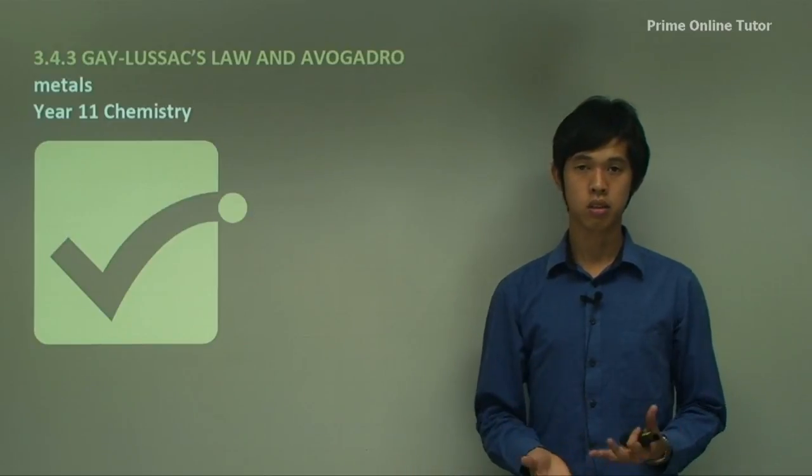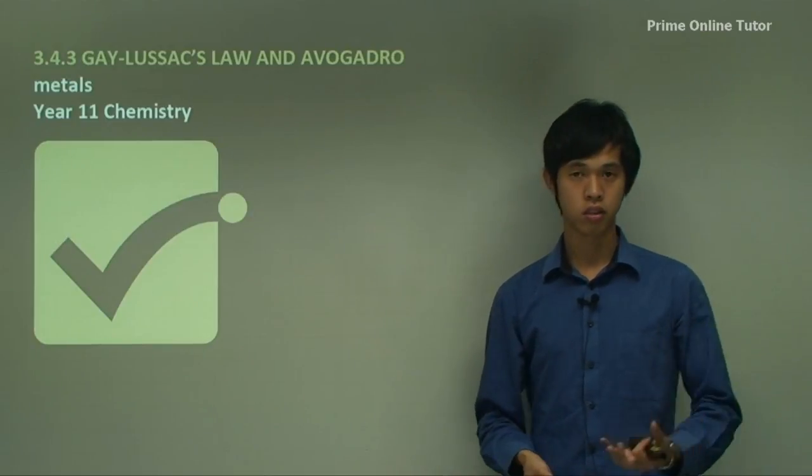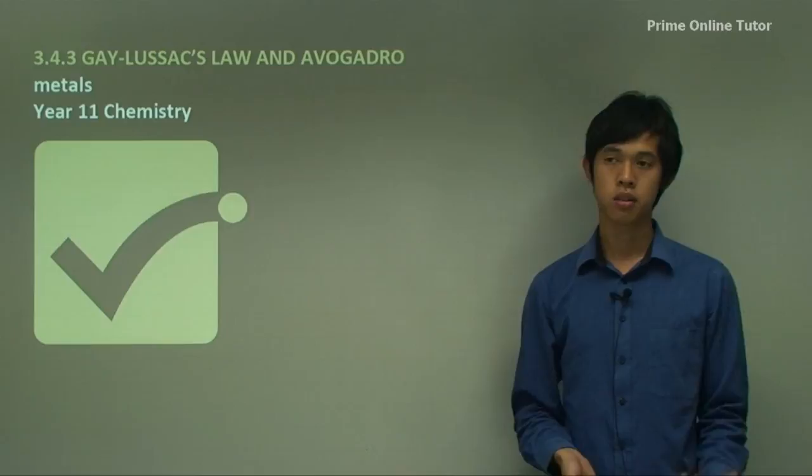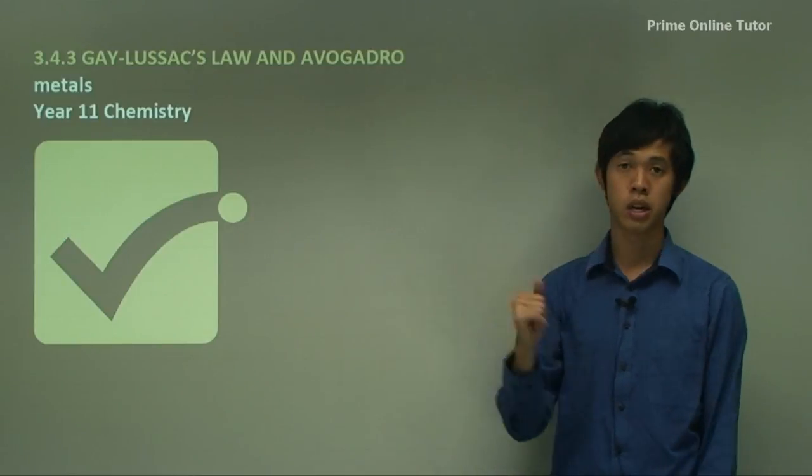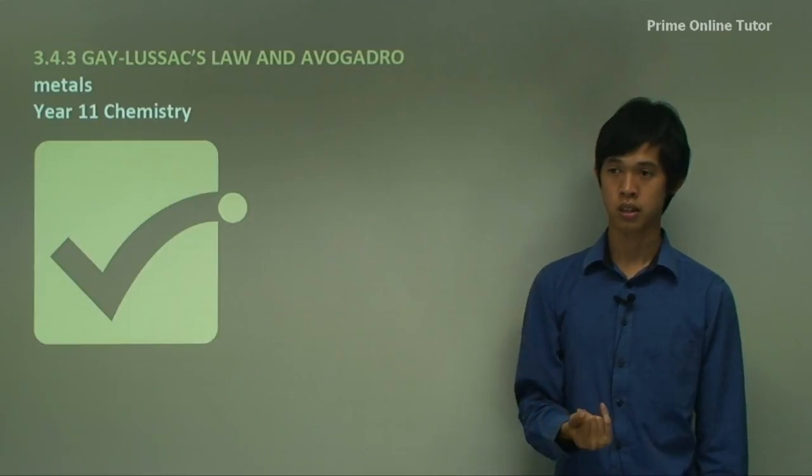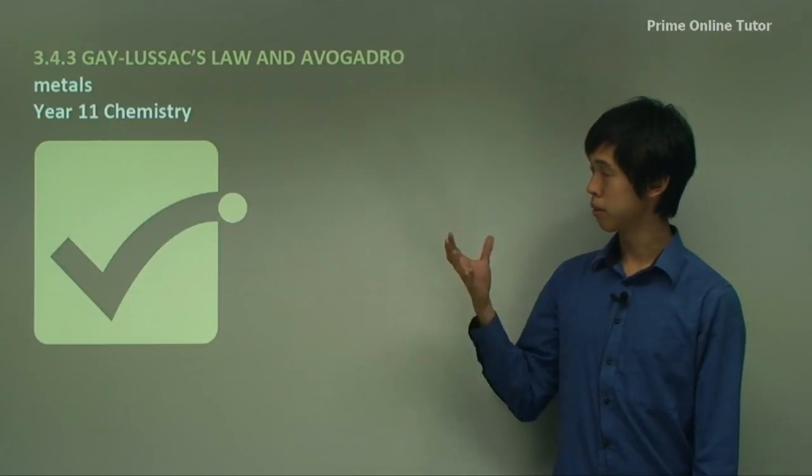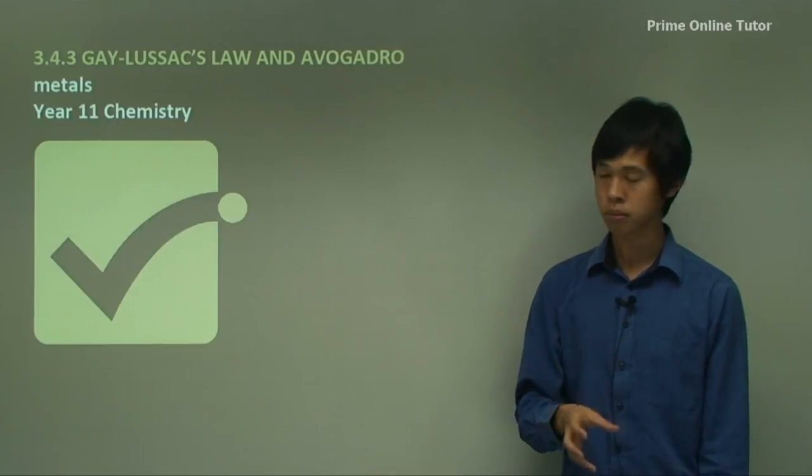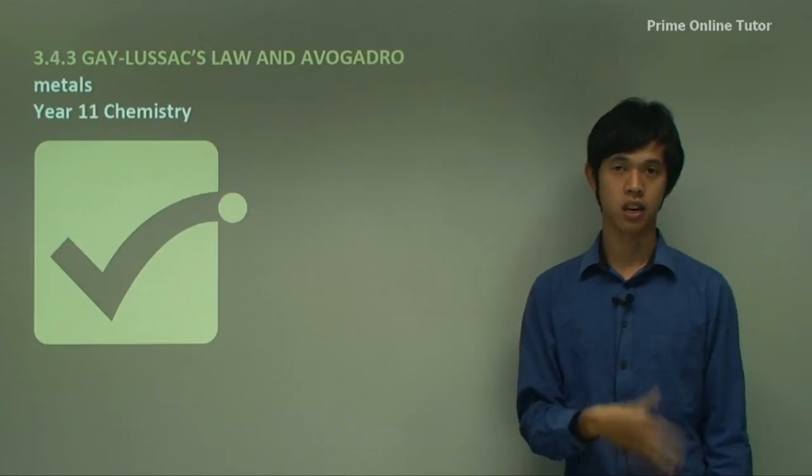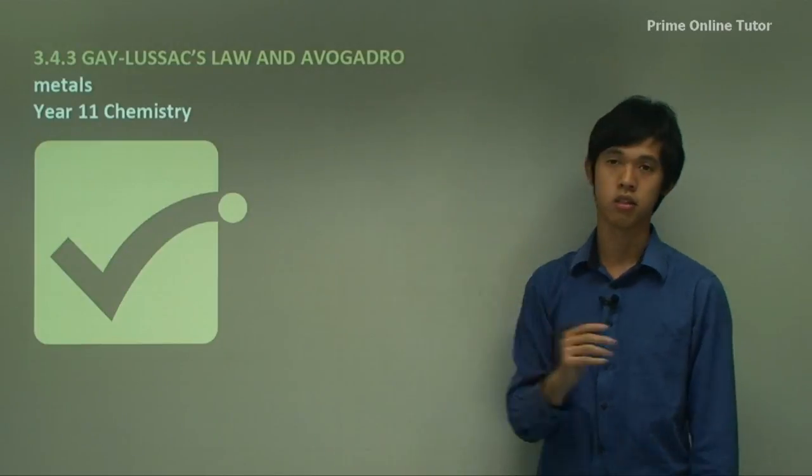So Gay-Lussac and Avogadro were two famous chemists and scientists. And they developed a lot of what we know about the mole. So we're going to develop more ideas about the mole, and we're going to see how they were developed through these two scientists.